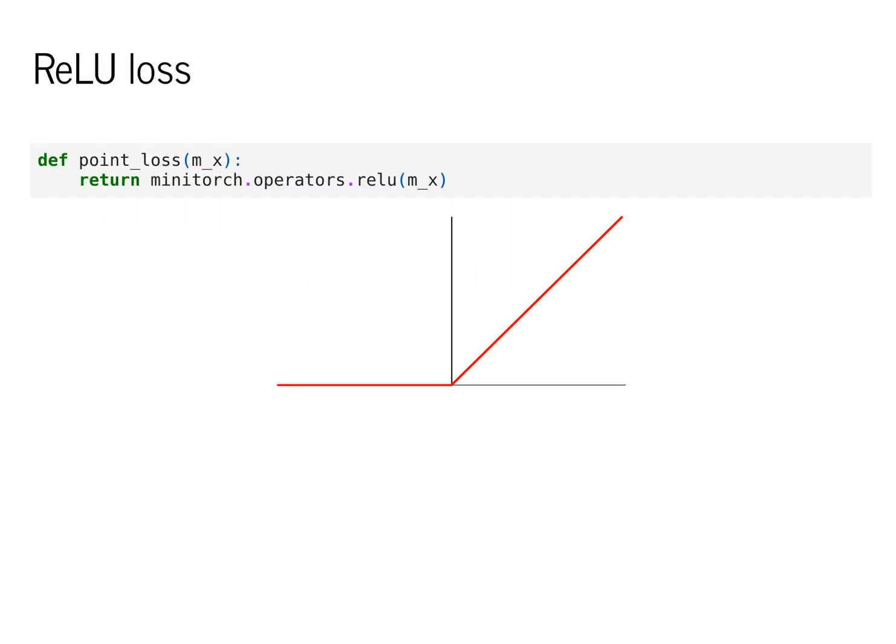The simplest loss function is ReLU. We implemented this in your class module 0. The way the function looks is that if a value is less than 0, it returns 0, and if it's greater than 0, it returns the value itself.